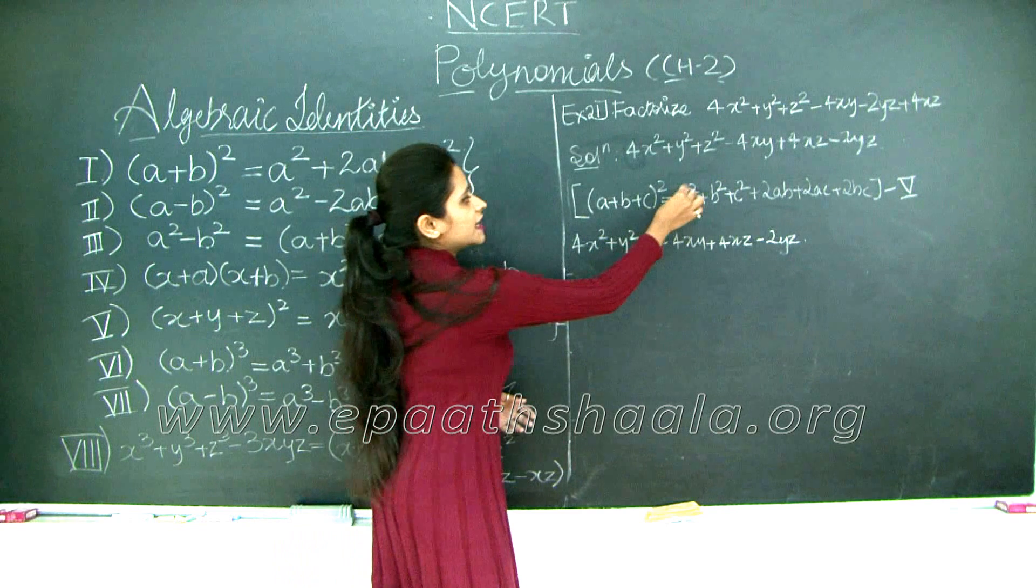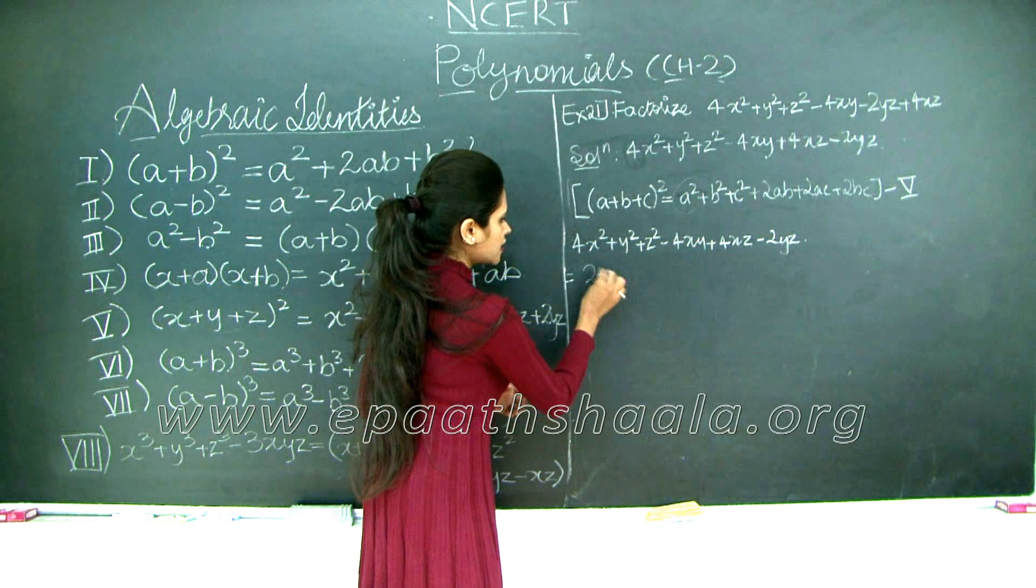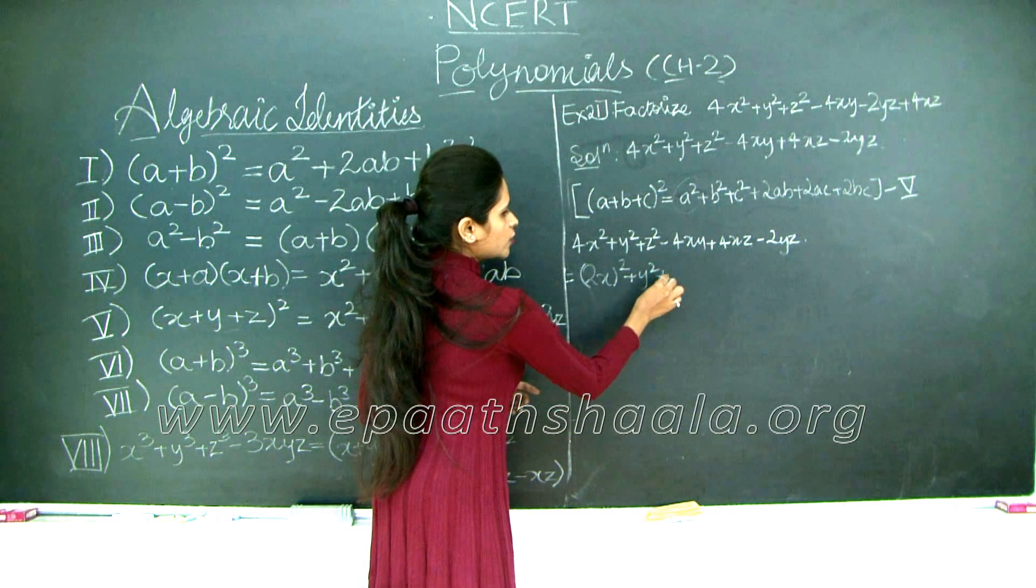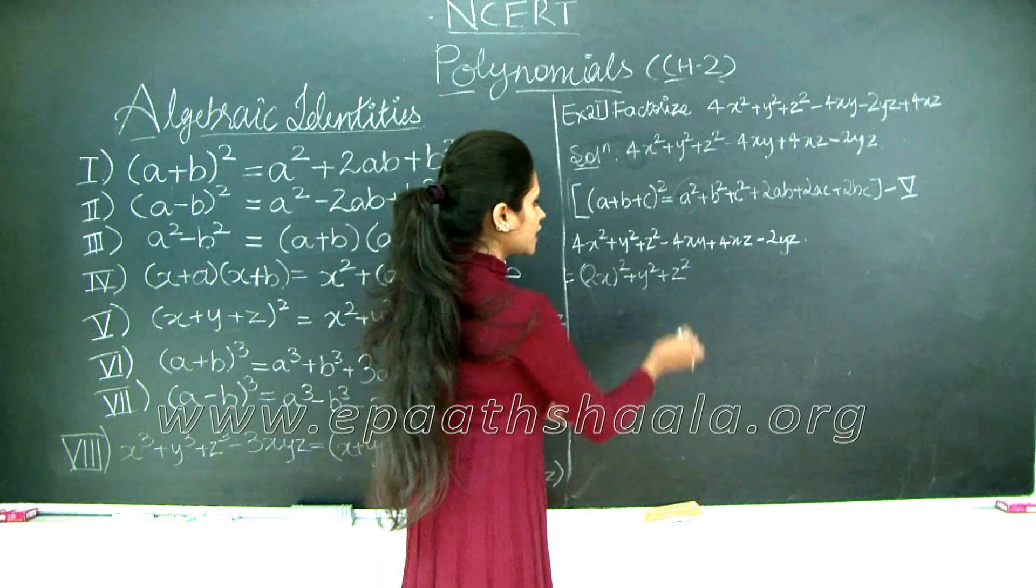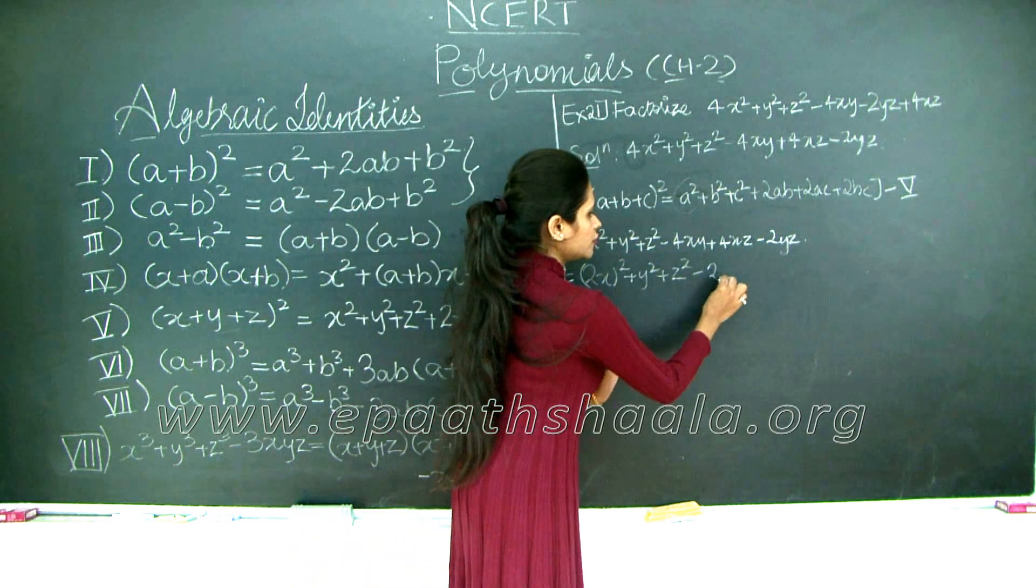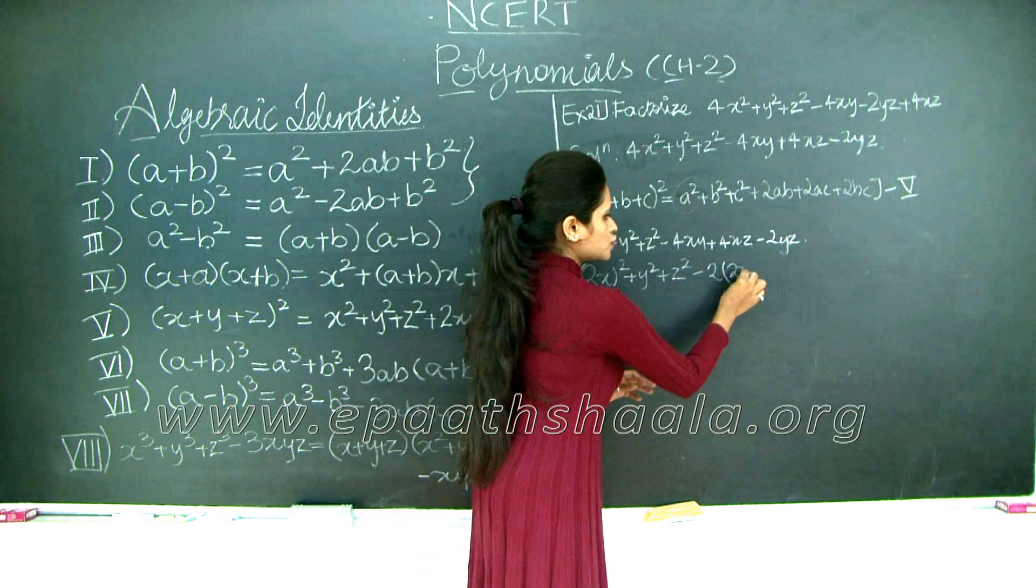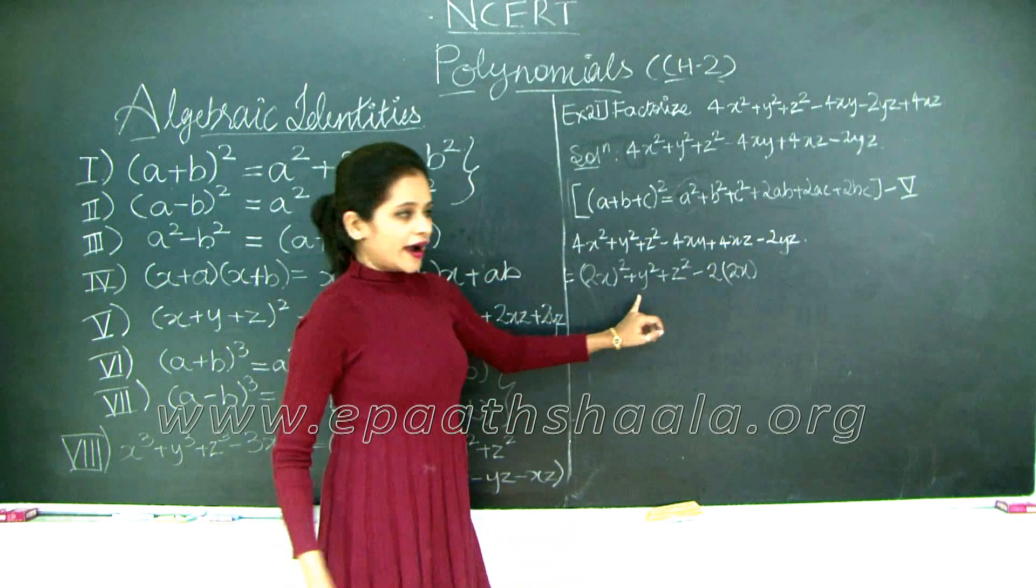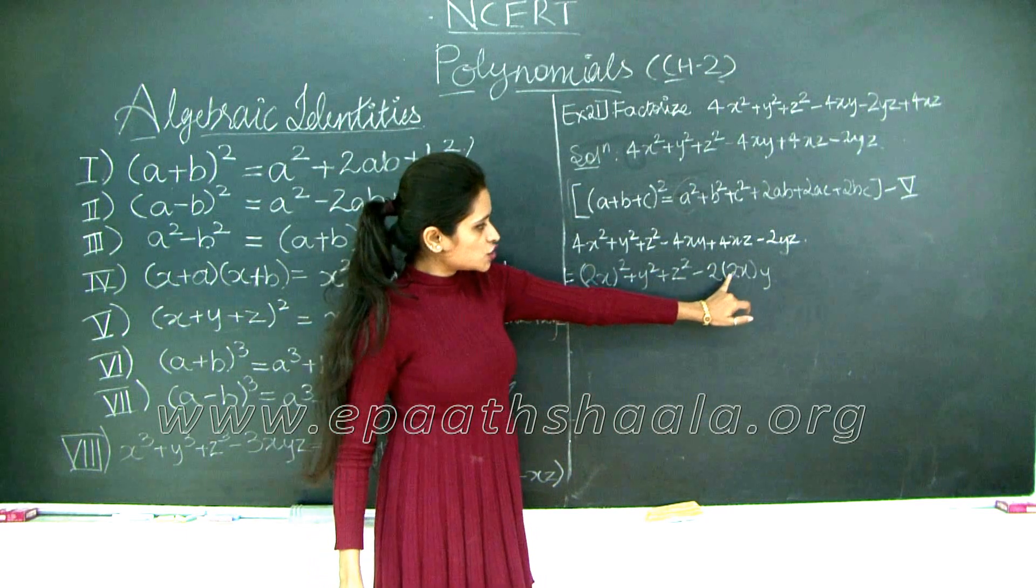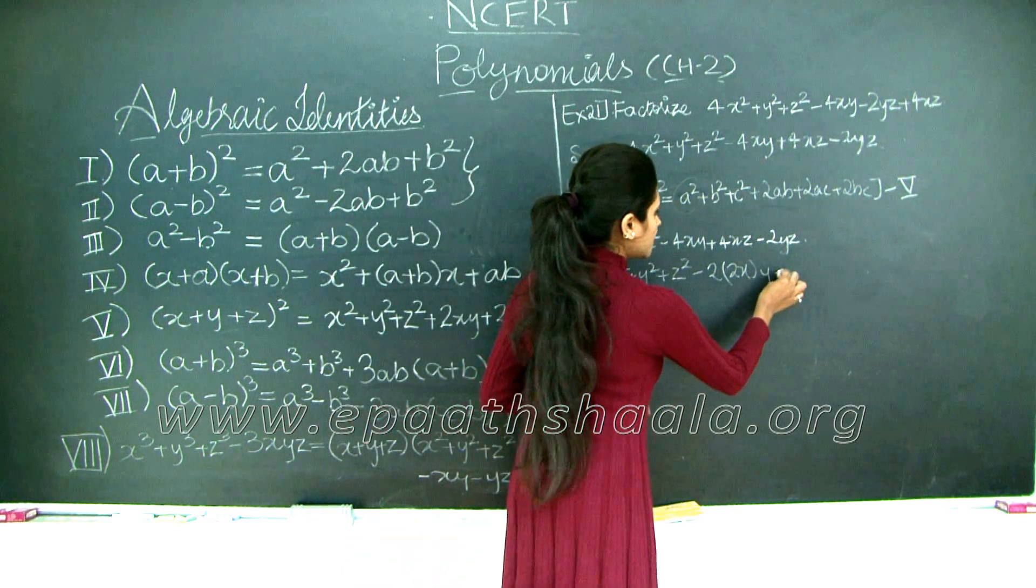So 4x square - we need an entire square as the first term. So 4x square can be written as (2x) whole square. We have b square and y square, so y square can be written as is, and z square can also be written as is. Now we need 2ab, which means we need a 2 over here. So 4 I'm splitting. And you need x, so your x is 2x. So 2x and you need b. What is my b? Y. So do I get 4xy by solving this? Yes. Minus 2 into 2 gives me 4, and x into y gives me xy. So minus 4xy.